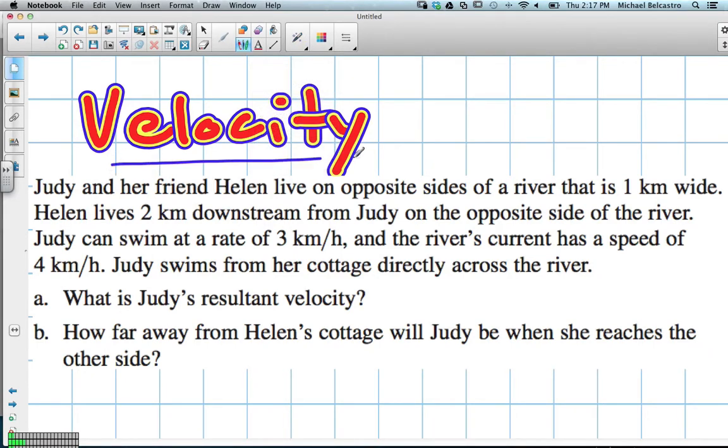Okay, we're going to look at velocity, which is 7.2 in your book. We have a question here. It says, Judy and her friend Helen live on opposite sides of a river that is a kilometer wide. Helen lives two kilometers downstream from Judy on the opposite side of the river. Judy can swim at a rate of three kilometers an hour and the river's current has a speed of four kilometers an hour. Judy swims from her cottage directly across the river.